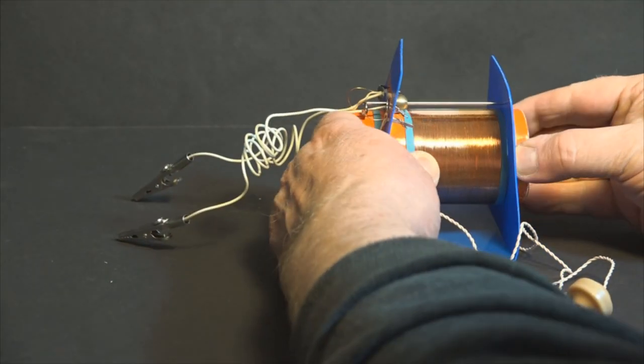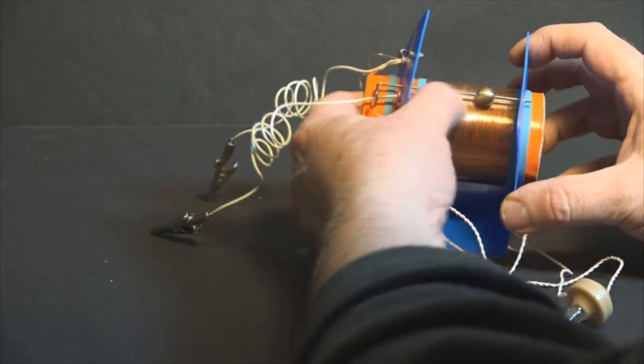So sliding the ball back and forth changes the length of the tuner circuit and tunes in different broadcast signals.